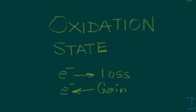The central metal ion of a transition element complex is positive because electrons are lost from the central metal ion. When electrons are lost, the ion itself is oxidized, and if it loses two or three electrons, then we can say that the oxidation state or oxidation number of that central metal ion equals the number of electrons lost.